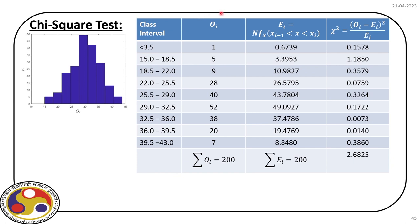The next task is to find out the chi-square value for the different classes. We have observed values and expected values segregated into classes. The total number of observations under both the observed and estimated columns are 200, confirming we cover all the test data. For individual classes, we find the chi-square value and sum them up, finally getting the chi-square value for all 200 samples, which turns out to be 2.6825.